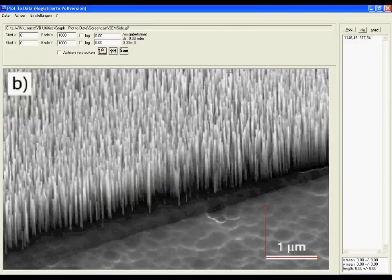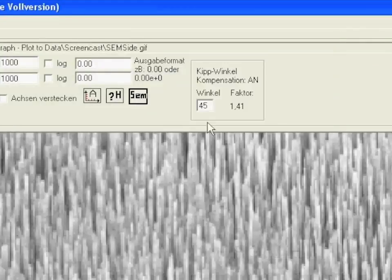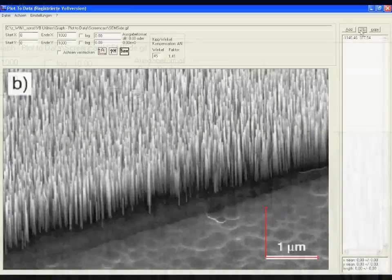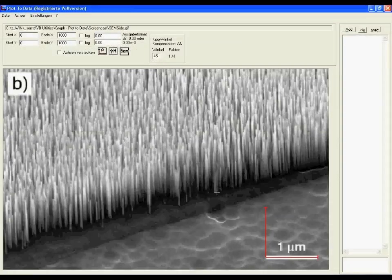Another good example of the program is the SEM mode. If you have a tilted sample like this one and you know that the tilt was 45 degrees then you can type in the tilt here. 45 degrees and then you will have the tilt compensation and you can measure height properly.